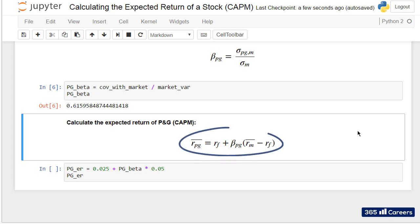Here is the formula. The variables on the right side are the risk-free rate, the beta of P&G, and the risk premium.